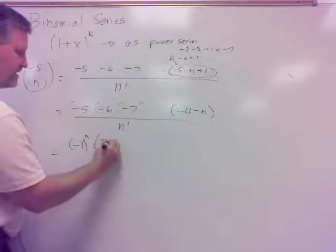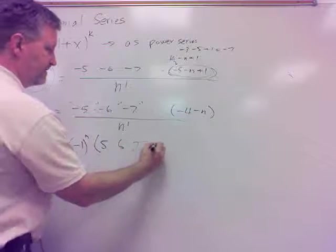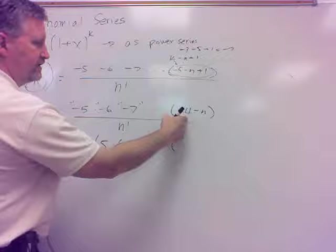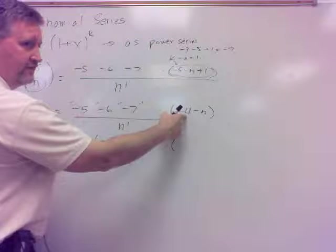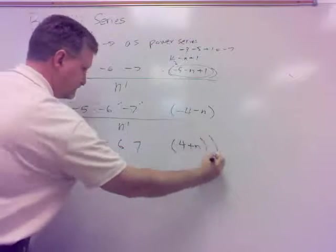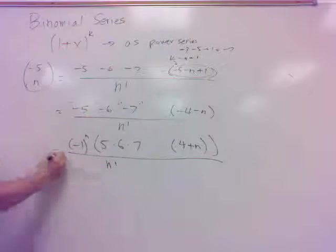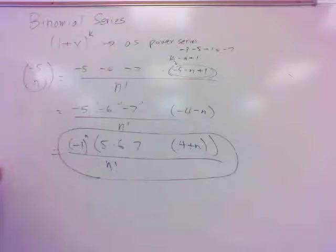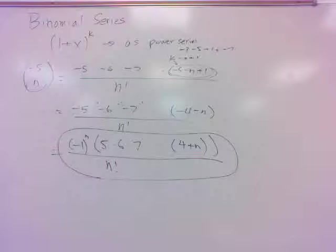So if I pull off negative 1 off of each of them, don't I have negative 1 to the nth power? Times, and that'd just be positive 5, positive 6, positive 7, all the way, and what would the last term be? Pull off a negative 1 off of that, it'd be 4 plus n, or n plus 4, yeah. All over n factorial. Probably have not ever done such a thing as that before. A little bit different.